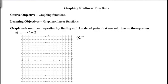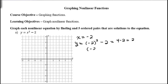Starting with x equals negative 2: y equals negative 2 squared minus 2. Squaring negative 2 gives positive 4, minus 2 equals 2. So we have the point (−2, 2), which I'll plot on the graph right away.